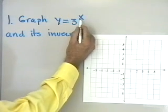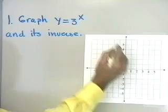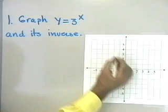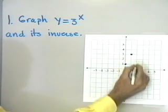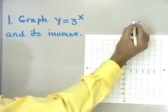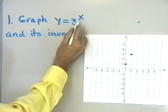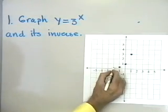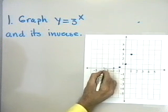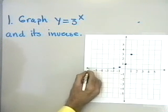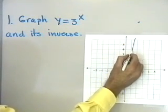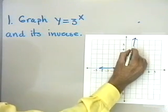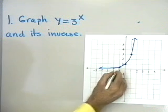Let's graph y equals 3 to the x. I'll let x be equal to 0; then y is 3 to the 0, which is 1. I'll let x be equal to 1; 3 to the 1 is 3. If x equals 2, y would be equal to 9. When x equals negative 1, 3 to the negative 1 is 1/3. When x equals negative 2, 3 to the negative 2 is 1/9, then 1/27, 1/81. I would get as close to the x-axis as I want, but never touch or cross it. So, this curve approaches the x-axis. Here is the graph of y equals 3 to the x.